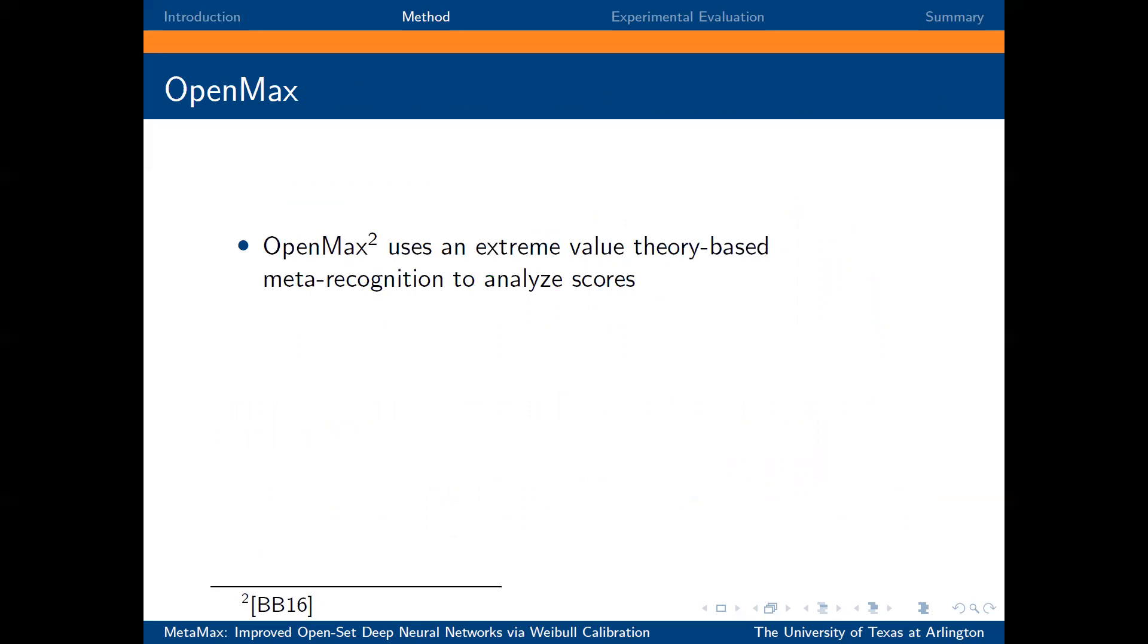The key idea of OpenMax is to use an extreme value theory-based meta-recognition algorithm to analyze scores and adapt a deep network for open-set recognition. It does this by introducing a new model layer, the OpenMax layer, which estimates the probability of an input being from an unknown class.